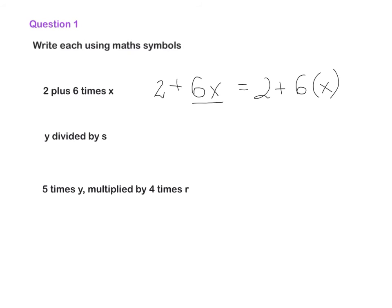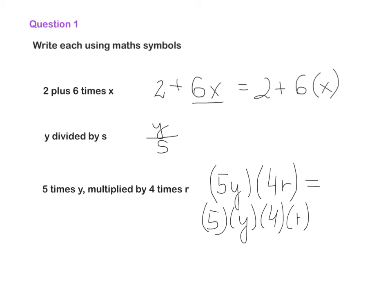Next one: y divided by s. And the next one is 5 times y, multiplied by 4 times r. Let's break it down. 5 times y: we have 5y. And then multiply it by 4 times r. Remember, if you want to multiply, we use brackets. We don't use x for multiplication anymore - x is a letter. We can also write it down in this form, and it's also correct. Take it down into your copy, please.